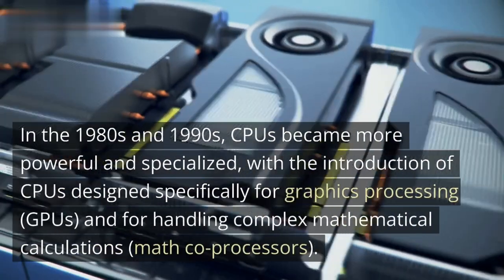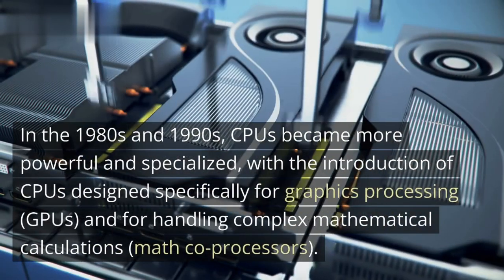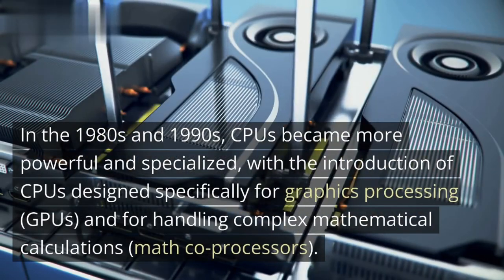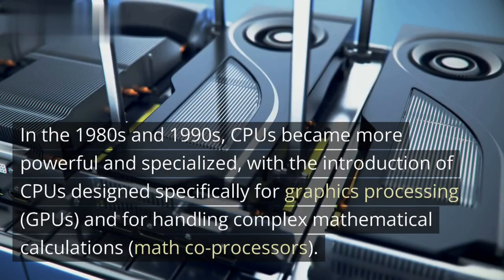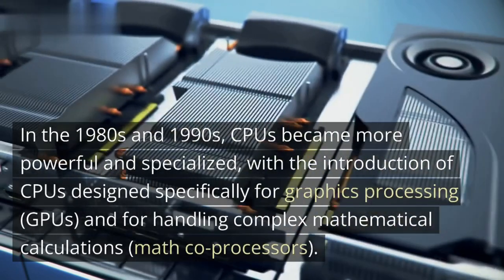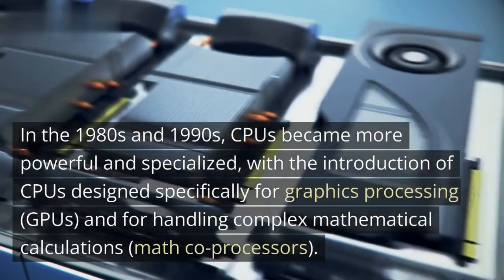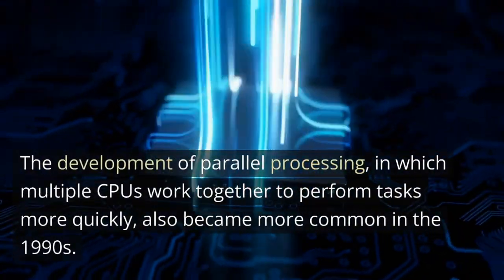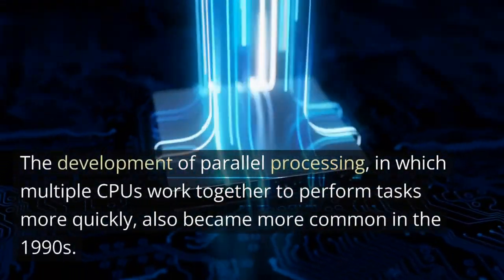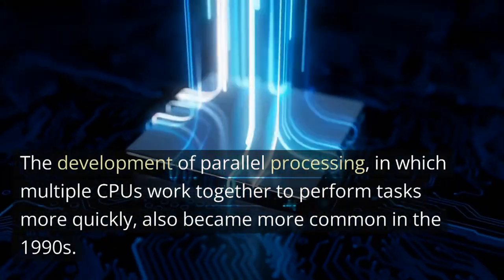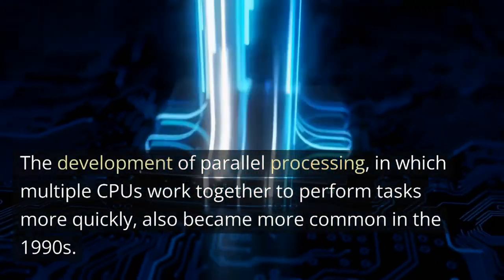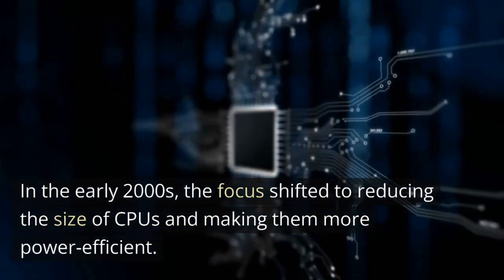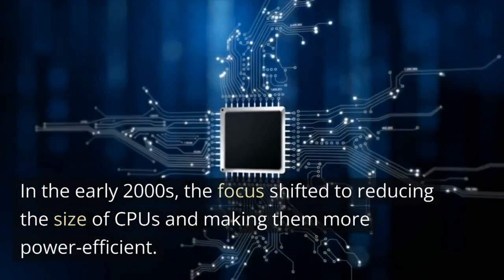In the 1980s and 1990s, CPUs became more powerful and specialized, with the introduction of CPUs designed specifically for graphics processing (GPUs) and for handling complex mathematical calculations (math co-processors). The development of parallel processing, in which multiple CPUs work together to perform tasks more quickly, also became more common in the 1990s.